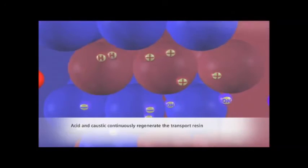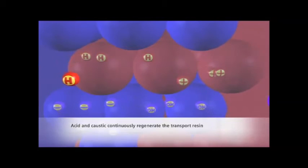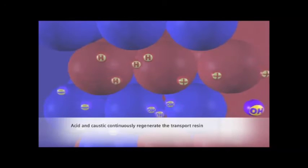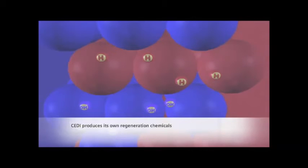The acid and caustic generated in the module regenerate the resin beads by replacing other trace ions remaining. The attachment of hydrogen and hydroxide ions to the resin beads is exactly what happens to resin beads when acid and caustic are used for regeneration in conventional deionization systems.